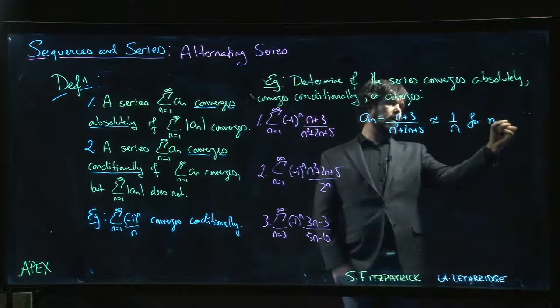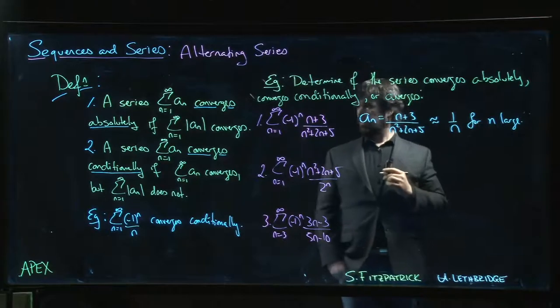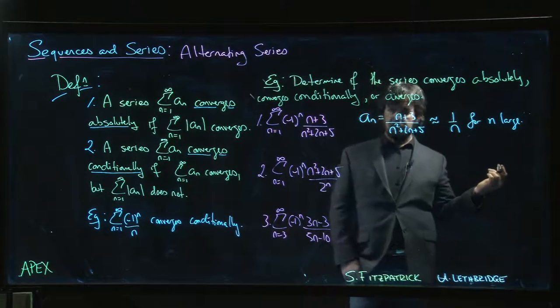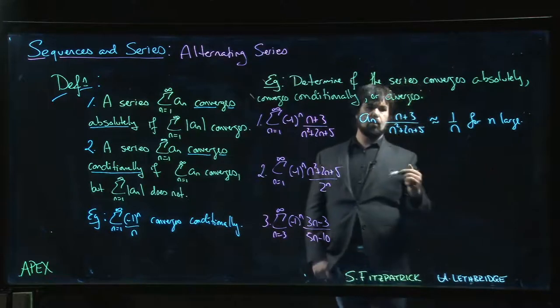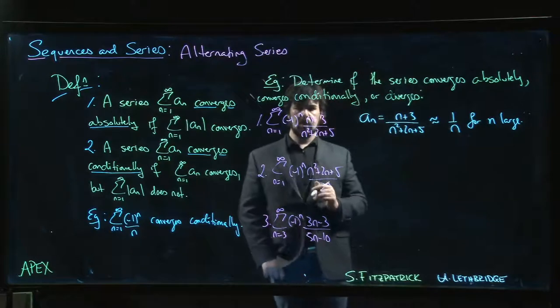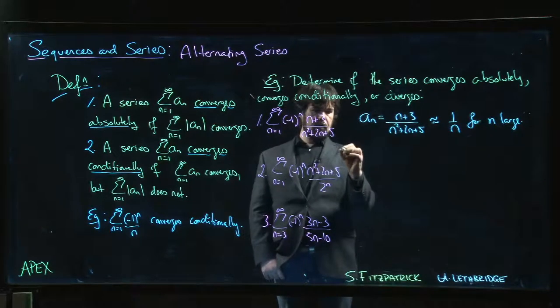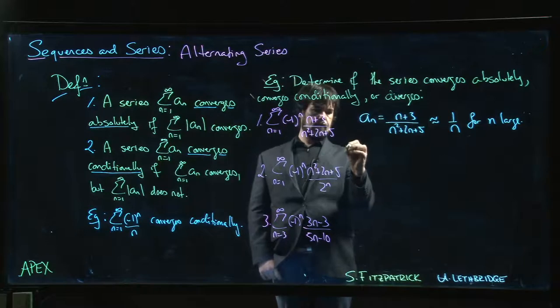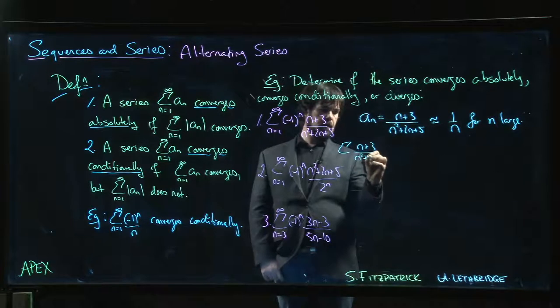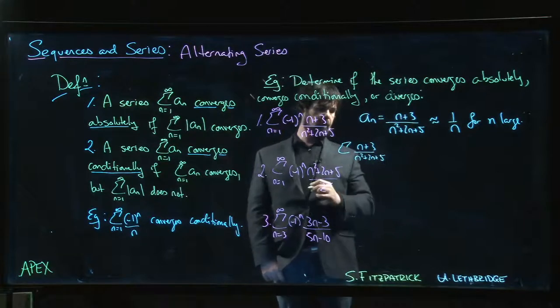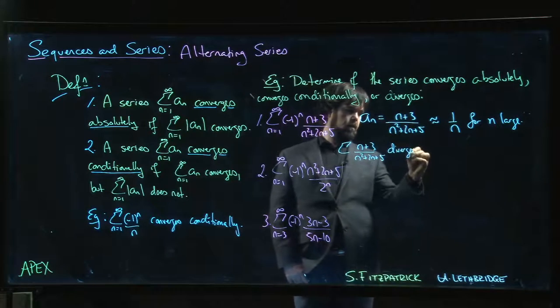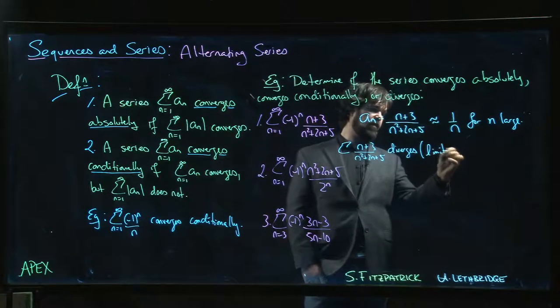So we can do limit comparison. Using limit comparison, we know that this is going to diverge if we take the absolute value. Taking the absolute value, we know that this diverges, and we do a simple limit comparison for that.